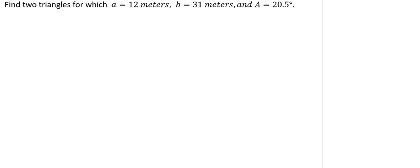Hey guys! So in this video, we're going to be looking at a two-solution case of a side-side-angle oblique triangle. And we're going to be using the law of sines to help us out there. So here we see that we find two triangles for which A equals 12 meters, B equals 31 meters, and A equals 20.5 degrees.